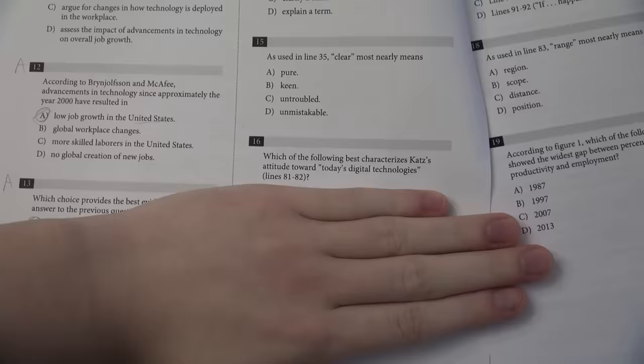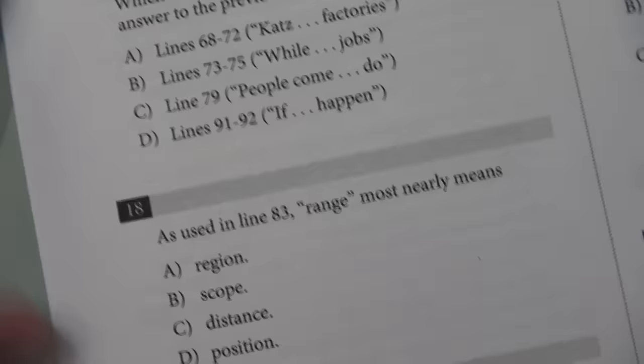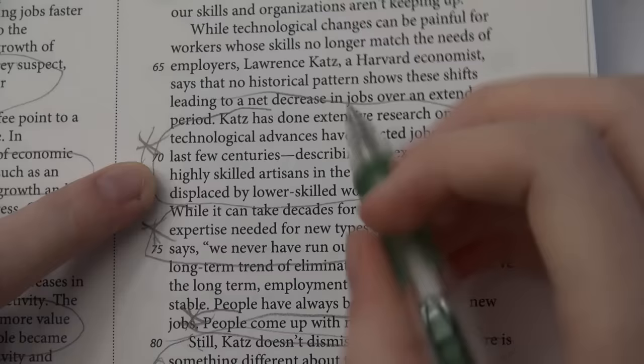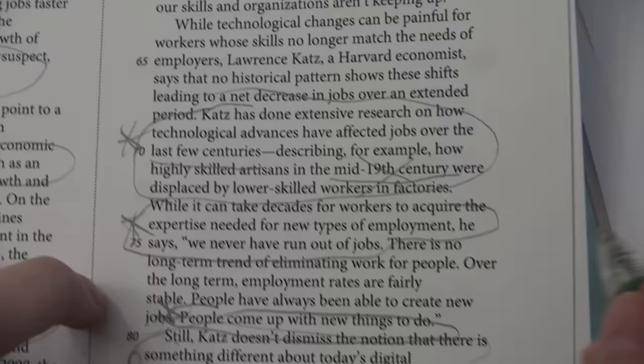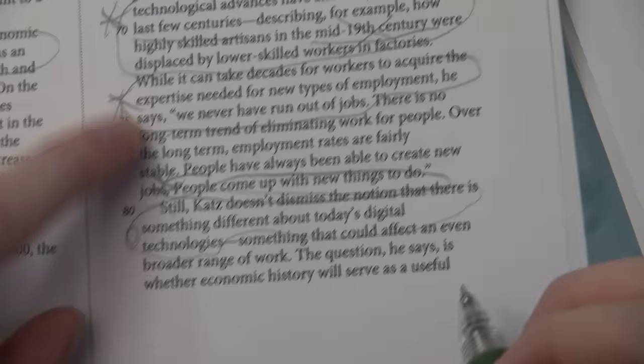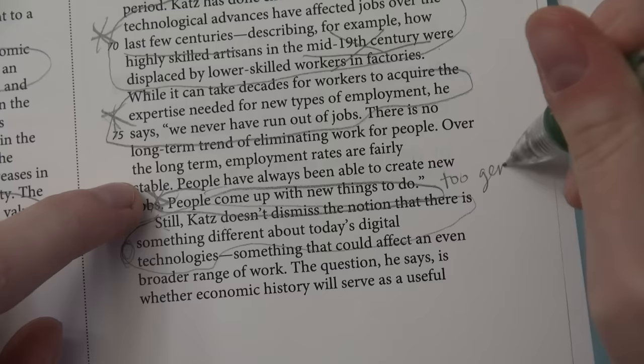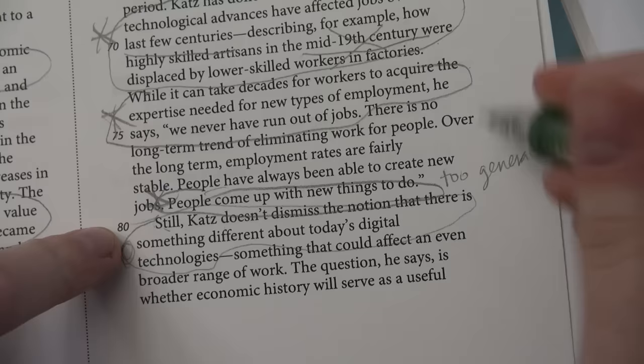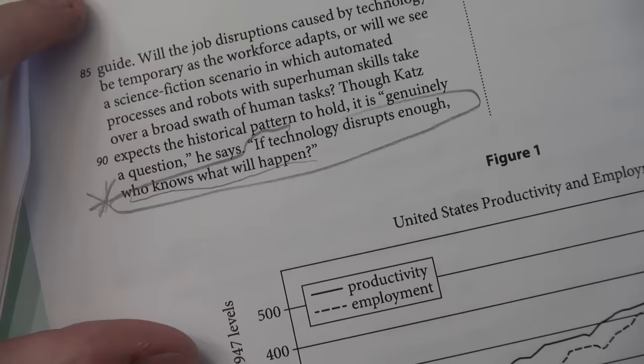Let's walk through an example to see how this works. This one asks what this dude's attitude is towards today's digital technologies. So we're looking for both some opinion from Katz, this dude, and it has to be about current technology. Now we look at each of the quotes. This one is just describing how he's done some research and stuff, and it also talks about 19th century technology, so that's a nope. This says we'll never run out of jobs, even though it may take time to develop the expertise for them as they change. This is a little more on the mark, but it still doesn't really state anything about new technology directly, so it's probably not that one. Next, he says, people always come up with new things to do. That also doesn't address new technology when you look at it out of context. It's a bit too general. In the last one, he says, if technology disrupts enough, who knows what will happen? This is the only one that directly answers the first question by mentioning today's technology in it.